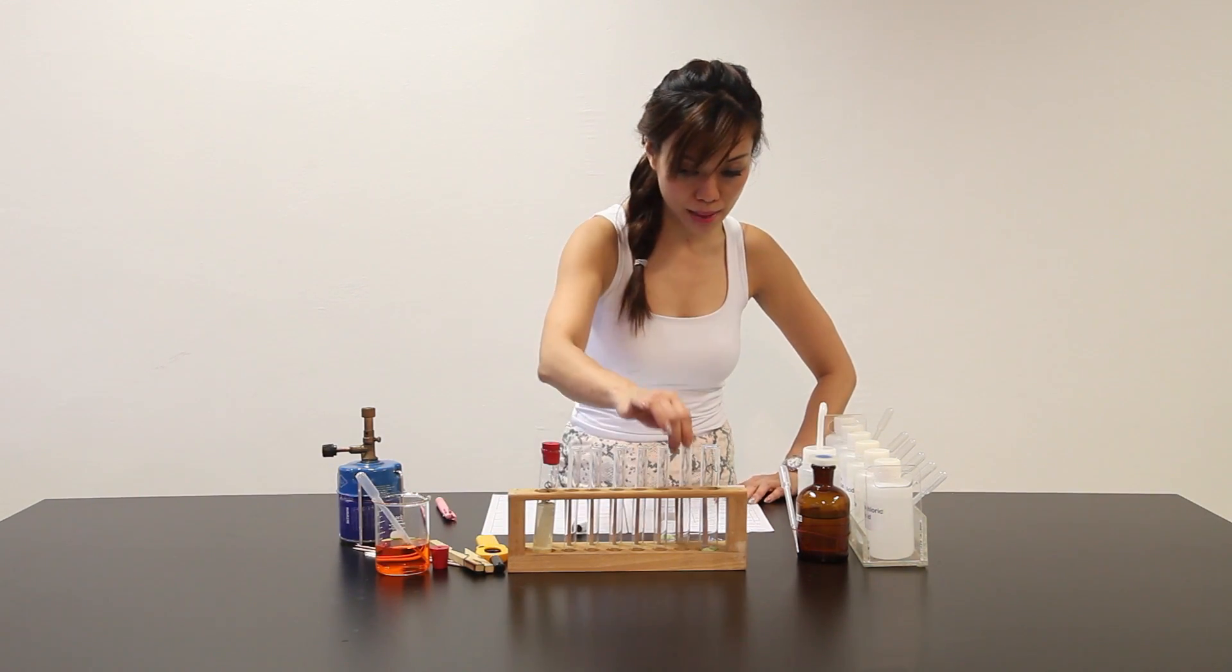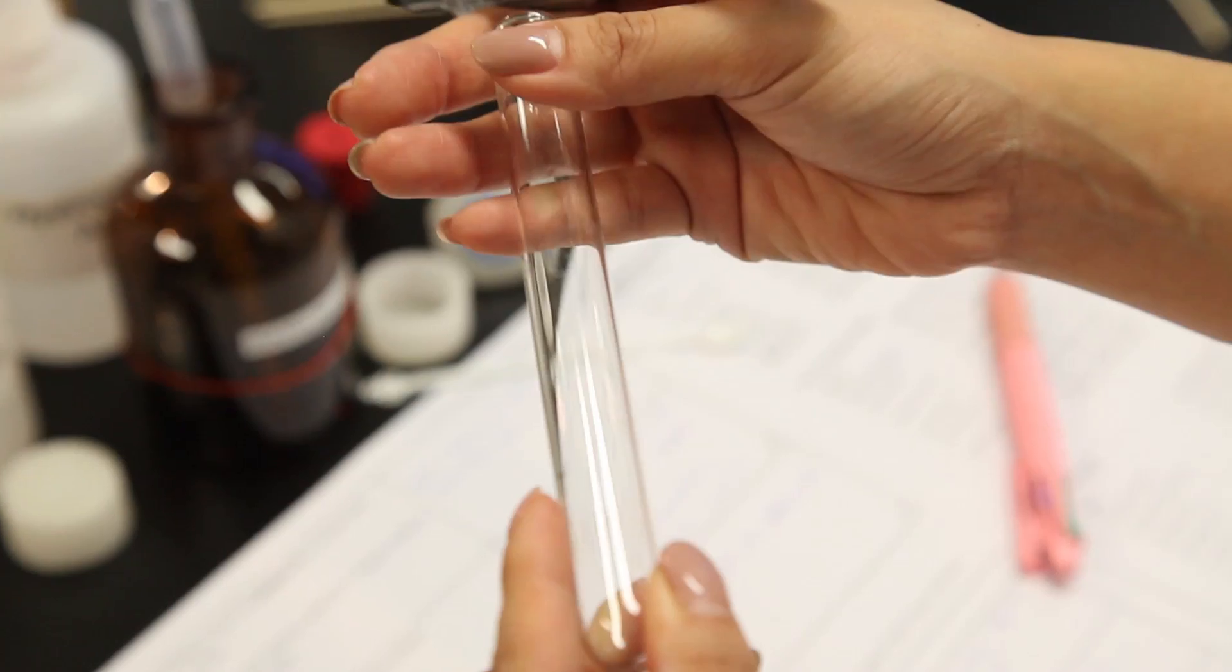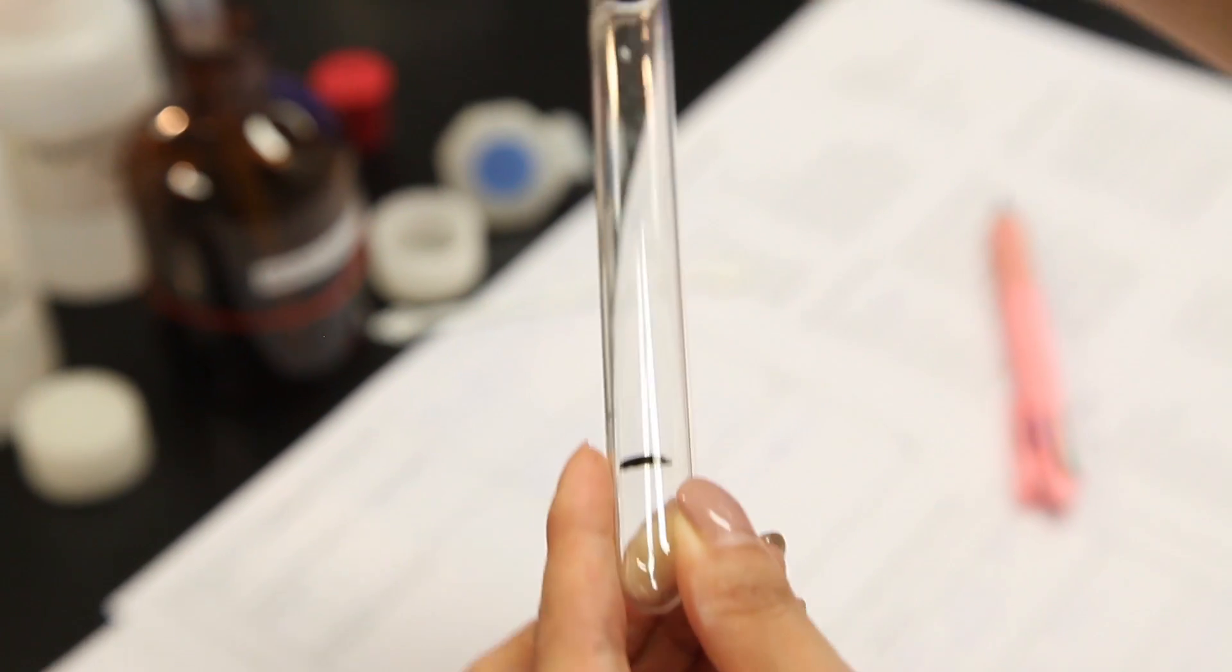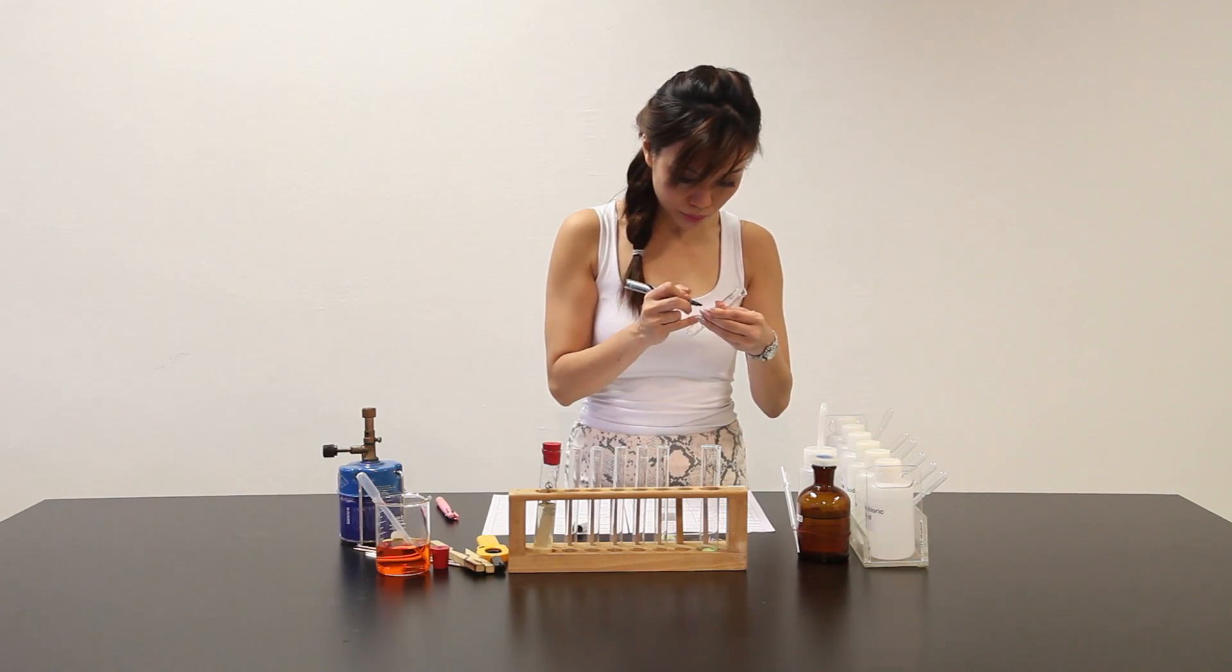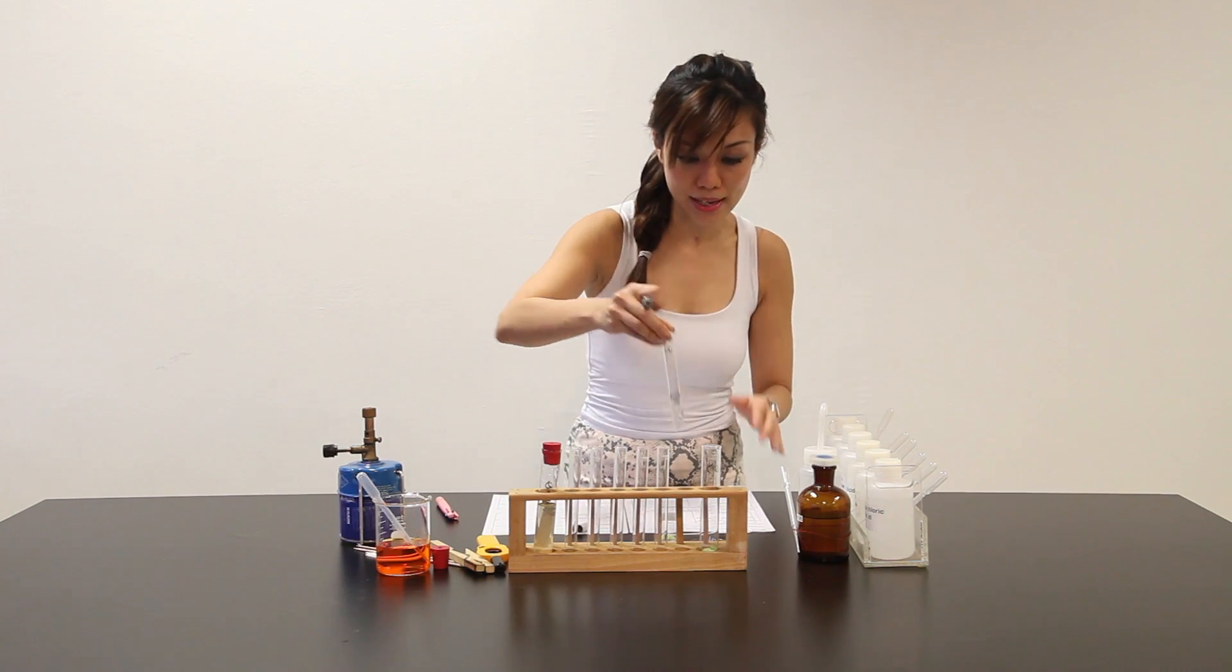So part B says place 3 cm3. Let me use the marker part B. 3 cm3. This is 2. Estimate 3 is about here. 3 cm3 of Q. Solution Q. Into a clean test tube.